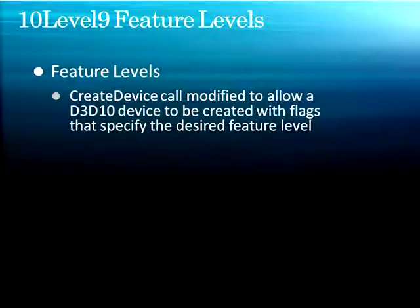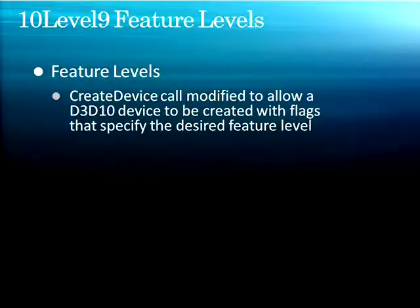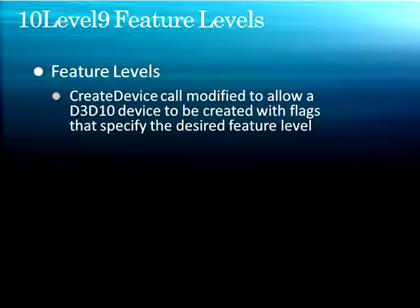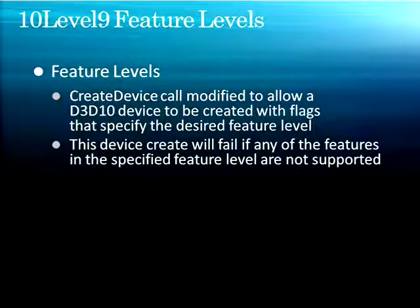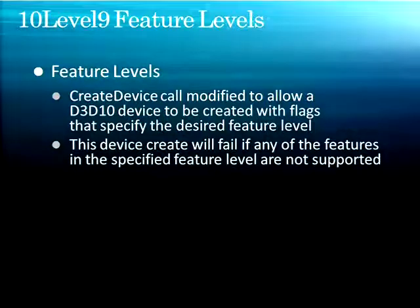So let's talk a little bit more about these feature levels. A feature level is basically a modification to the create device call that allows the D3D10 device to be created with flags that specify the desired feature level. You'll see a code sample of this in a minute. The create device call has been modified to let you know what level of device you want to create. And if you try to create a device that has functionality greater than the card you actually have, the create device will fail — it fails if any of the features in the specified feature level are not supported. So you can't mistakenly create the wrong level of device.